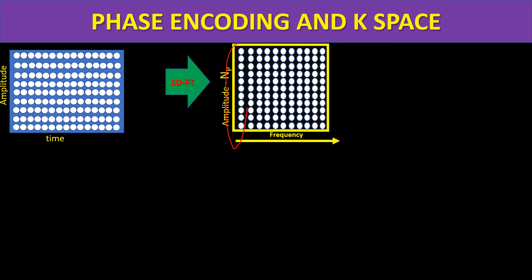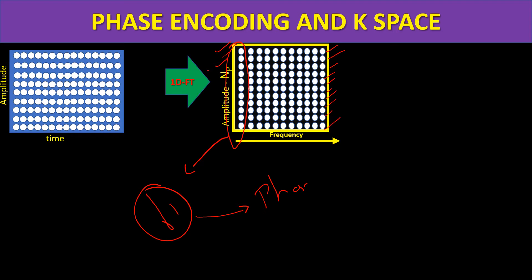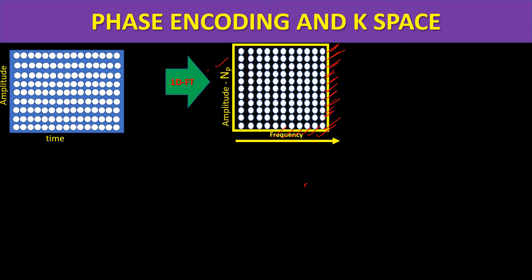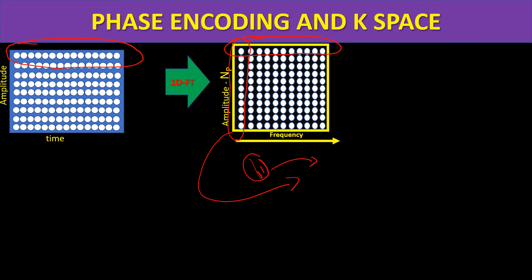I then do a Fourier transformation in the phase encoding direction. From right to left are the multiple phase gradient steps. These different phase gradients were used to measure the steps. After the first Fourier transformation — using amplitude vs. time — I found what frequencies contribute to those amplitudes. Then doing a second Fourier transformation along the phase direction, I can identify the difference in phase gradients applied between steps.